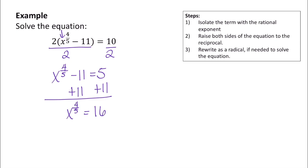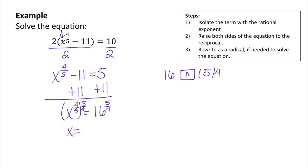We can undo that exponent by raising both sides to the reciprocal, which is 5 over 4. We get x equals 16 to the 5 over 4, which you can enter in the calculator as 16 caret 5 over 4. You should find that 16 to the 5 over 4 gives you x equals 32.